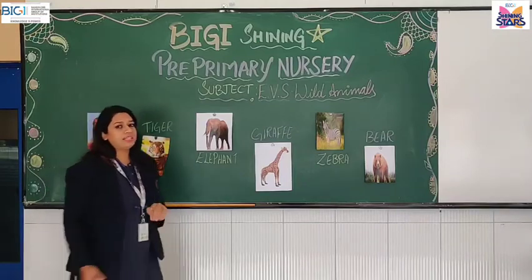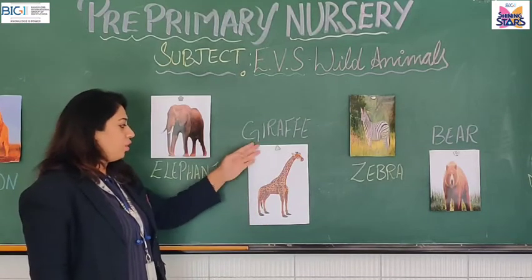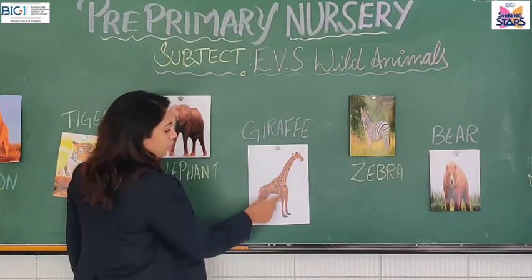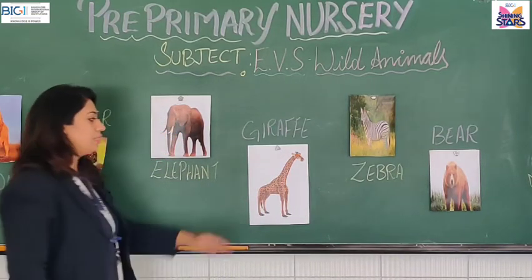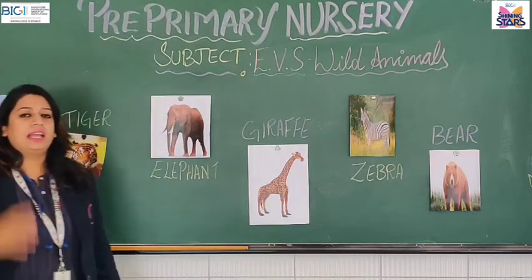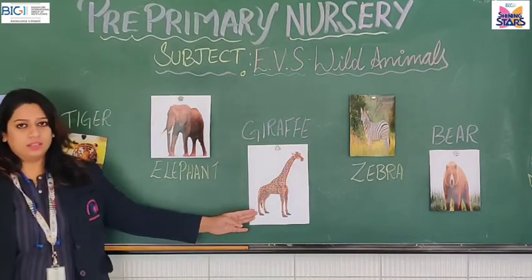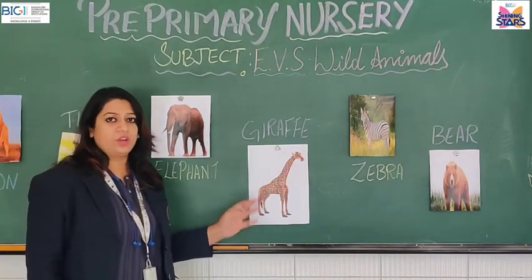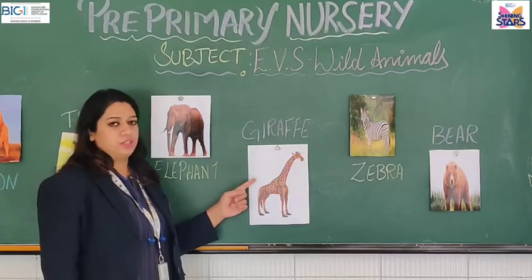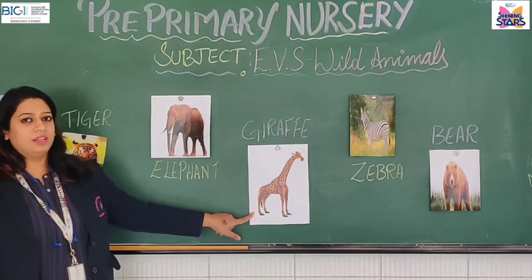Now, I will show you the tallest animal. Look here, children. This is a giraffe and it is the tallest animal. Can you see this long neck and these long, long legs? A giraffe can reach up to the top of the tree and eat all the leaves. So, this is the tallest animal on the earth. This giraffe will eat all the plants and grass available in the forest. So, this is a giraffe and it is the tallest animal on the earth.